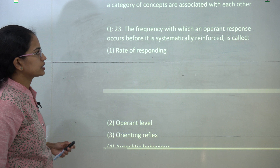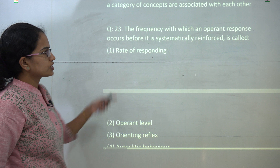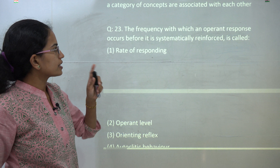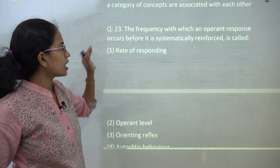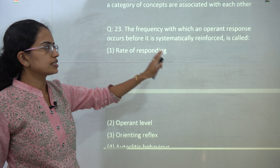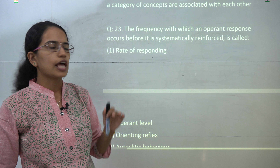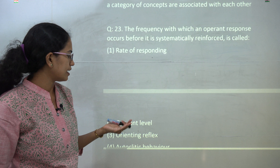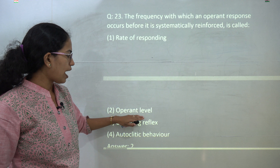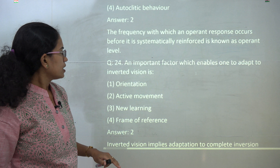The next question: the frequency at which an operant response occurs before it is systematically reinforced is known as the operant level. So 'operant level' is the correct answer.